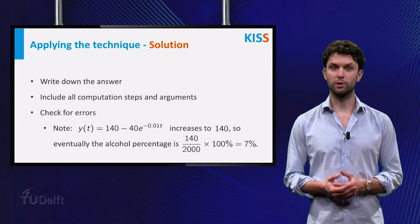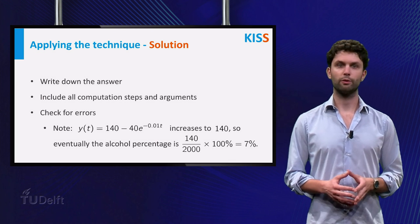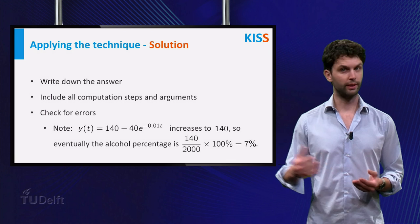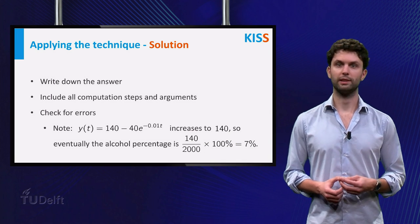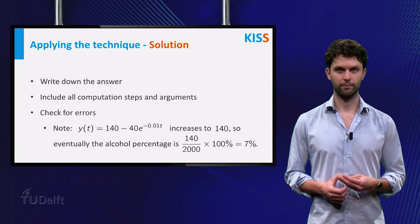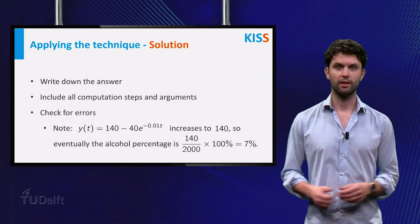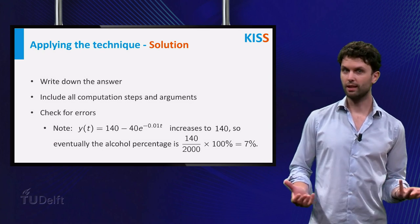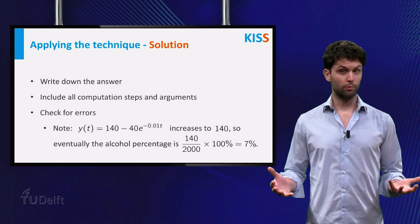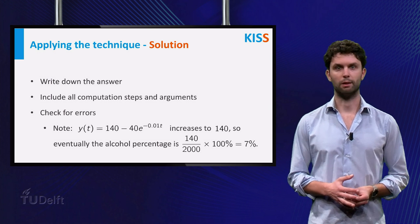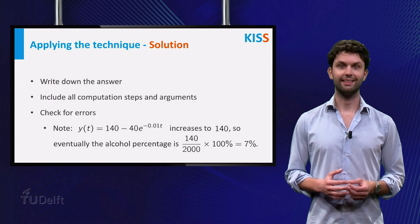For instance, observe that the function y increases to 140 as t goes to infinity. So, eventually, the alcohol percentage will be 7% in the tank. Which makes perfect sense, since beer with 7% alcohol is flowing into the tank and the mixture is flowing out, so 7% will be the alcohol percentage of the tank in equilibrium.